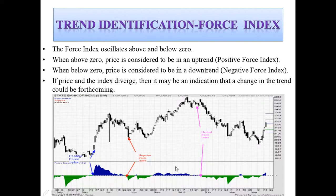If the price and the index diverge, it may be an indication that a change in trend may be forthcoming. Here it is neutral because it's basically almost range bound in this area. As we can see, this indicates a bullish price move; this is a bearish price move, as we can see it being reflected in the candlestick chart.